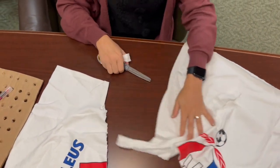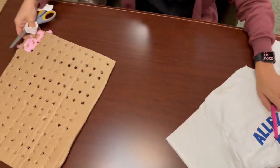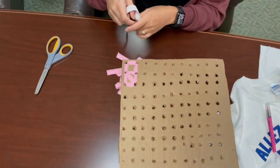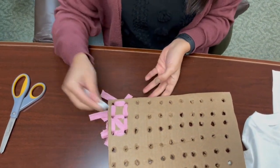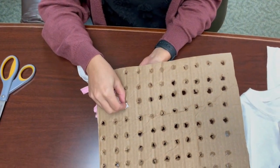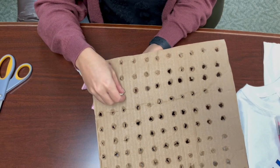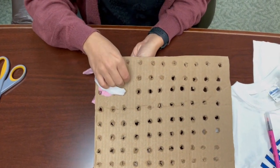You will take your strip then and work on weaving it through into the board. Take one end of the t-shirt and choose a hole and push it through and then the other end through a hole either